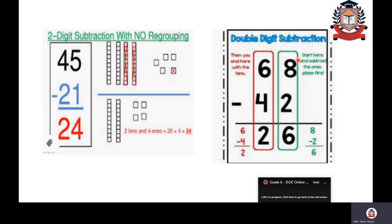Here is one more example. Always start with ones place. Eight minus two: take eight fingers and take away two. Eight minus two gives you six. Now moving to tens column: six minus four. Six minus four gives you two. So the answer is twenty-two. This is how you subtract two-digit numbers.